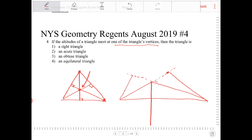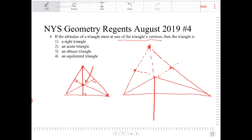So for an obtuse triangle, it will look something like this. The altitudes are going to intersect outside of the triangle there, and it doesn't land on one of the vertices. So that wouldn't work, right?